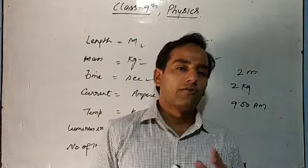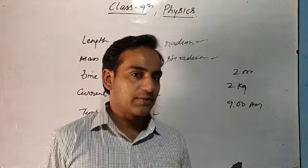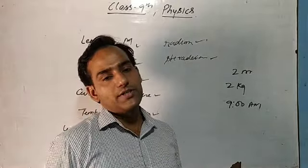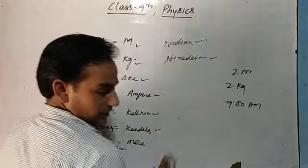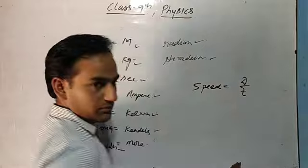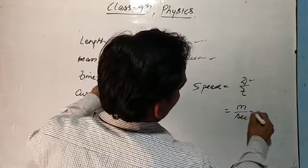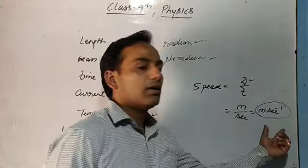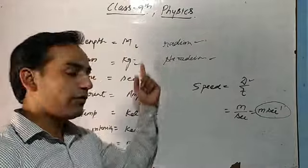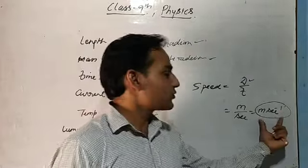This is all about fundamental quantities and fundamental units. Fundamental units are of two types. We have the seven fundamental units — meter, kilogram, second, ampere, Kelvin, candela, mole — but with the help of these fundamental units, we make more units called sub-units. For example, if we have to find the unit of speed: speed equals distance divided by time. Distance is measured in meters, time in seconds, so speed is measured in meters per second — that is a sub-unit.